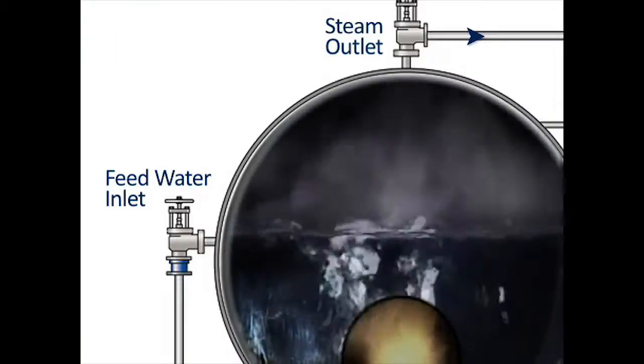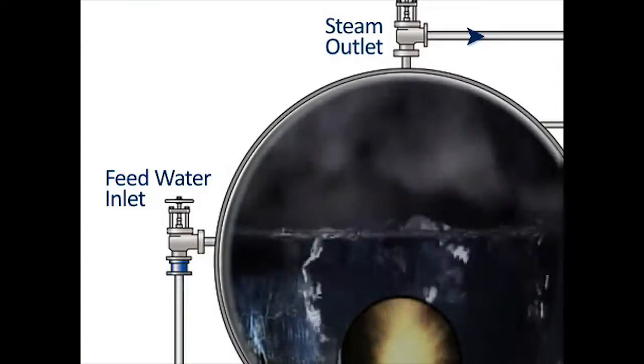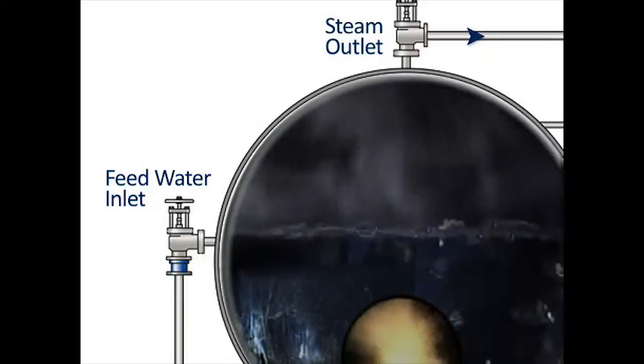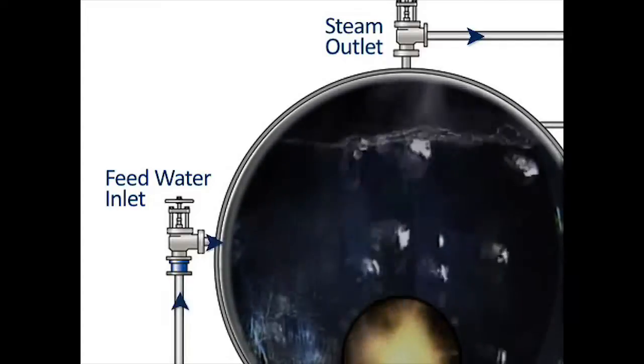When water level falls to a predetermined point, the feed pump switches on and fills the boiler to the required level, and so the cycle is repeated.